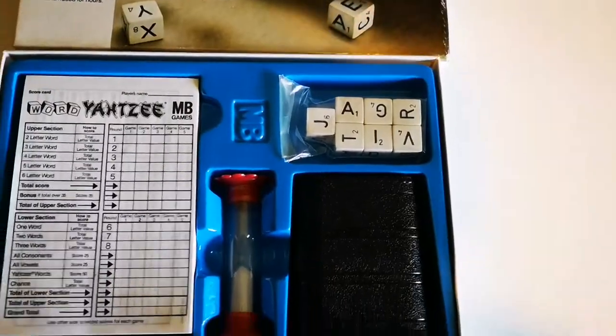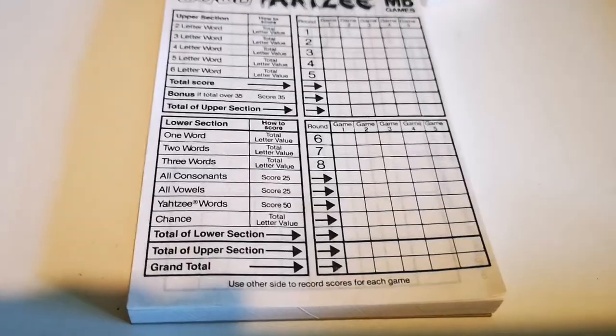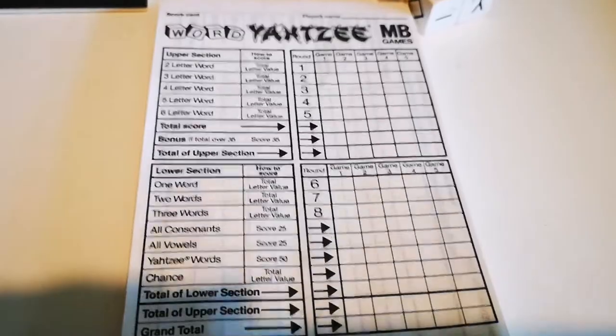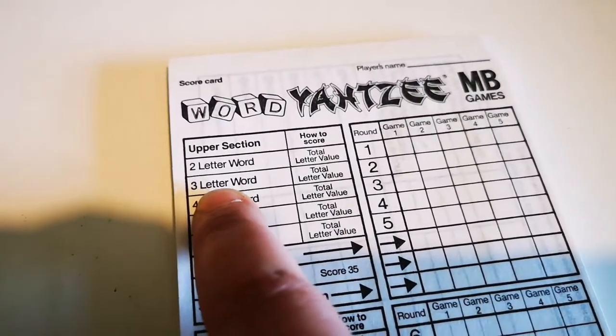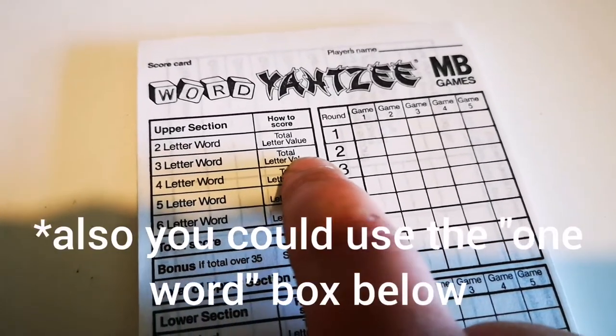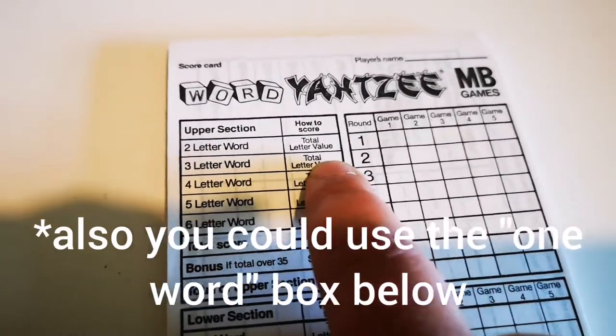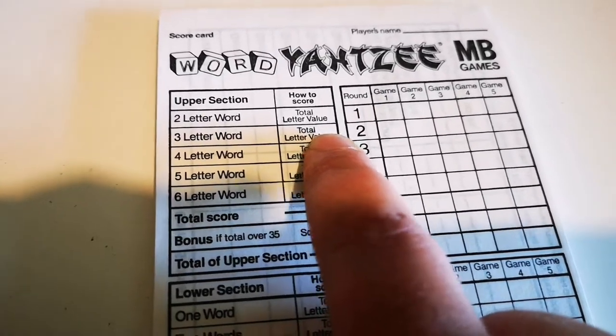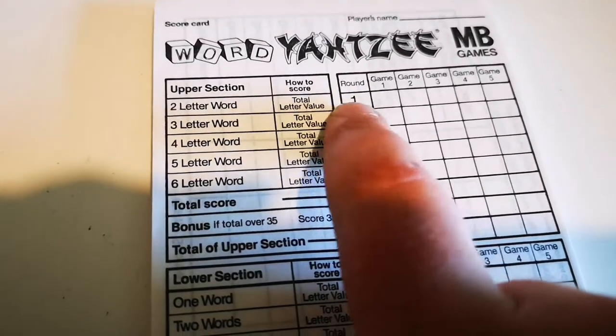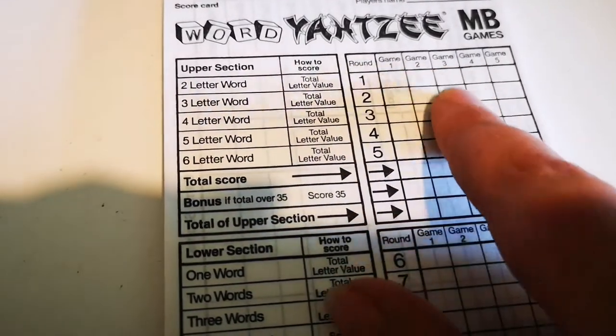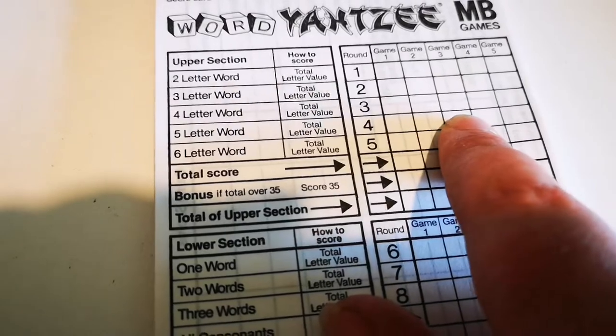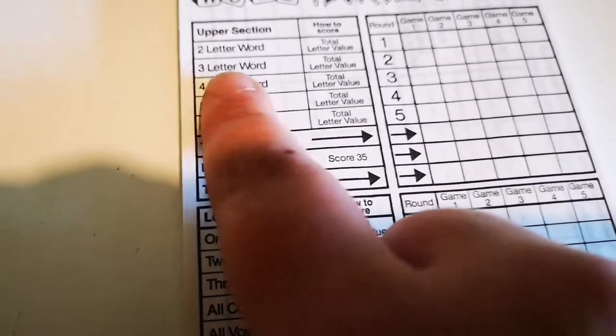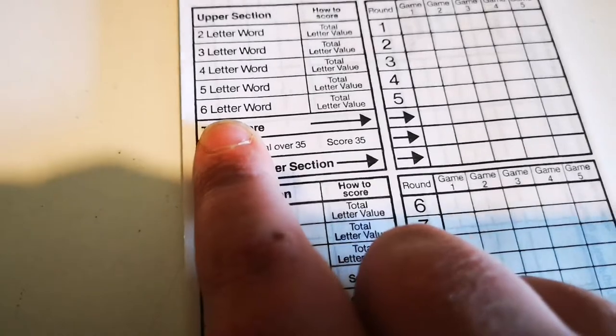The way that you would then write that down on the score pad would be like this. So to find out where and how many, where you put and how many points you've got, you look on the list here. So if you see, we made a three letter word, which was jet, and it says total letter value. So that is how many points you get, which was the six plus two plus one, so nine. And then if we're in game one and round one, we put the nine there. If it was our third game, and we're in the fourth round, we would just follow it along there, and it would be this one. So basically, these are all the same, it just depends on how many letters and dice you manage to use.